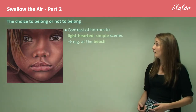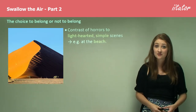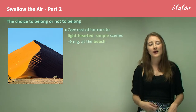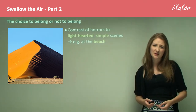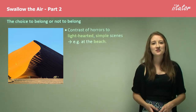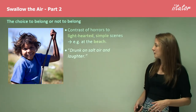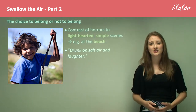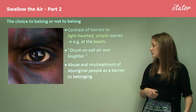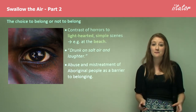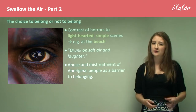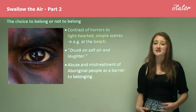The next theme is the choice to belong or not to belong — something specifically in your rubrics worth examining. There's a contrast in the novel between the horrors of the awful Block environment and the light-hearted simple scenes of beautiful family interactions, for example scenes at the beach. The quote 'drunk on salt air and laughter' is a beautiful metaphor showing they're so in touch with the air, water, and sand that they're absolutely drunk with happiness. This contrasts with the abuse and mistreatment of Aboriginal people, which becomes a barrier to belonging — perhaps through a subconscious decision that Aboriginal people don't feel they belong to mainstream culture.